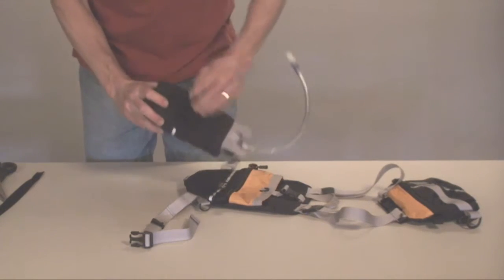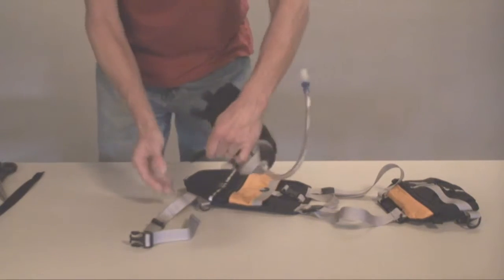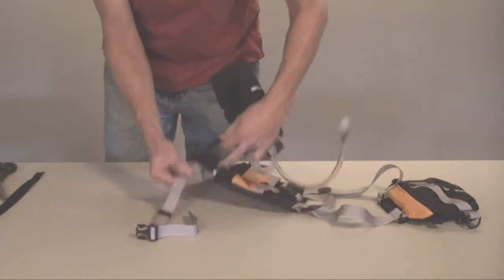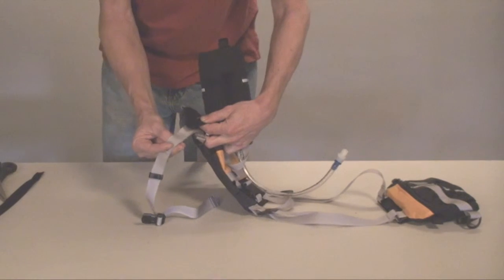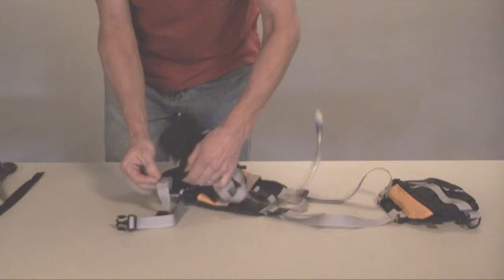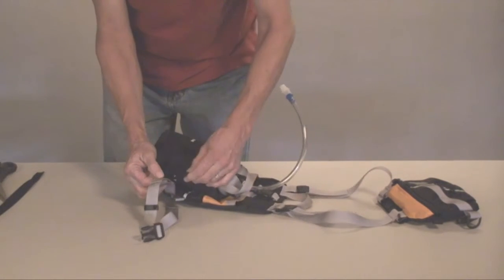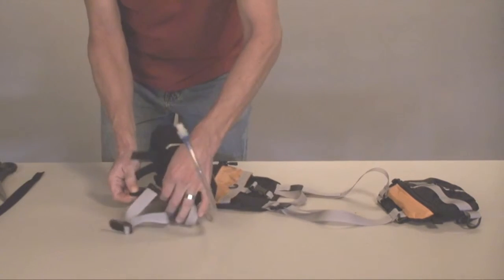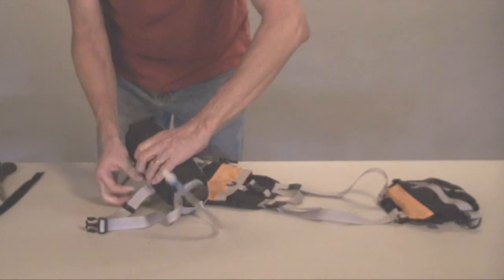Open up the tabs, as shown, and slide them through. If you see on the hydration module, there's two loops here and here. You slide through the tabs, through both of these loops, one through each loop, and then back upon itself, as shown.